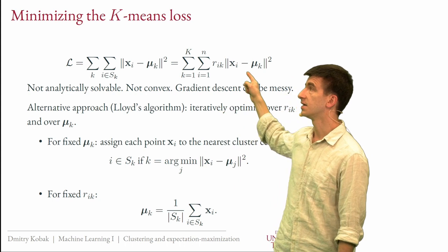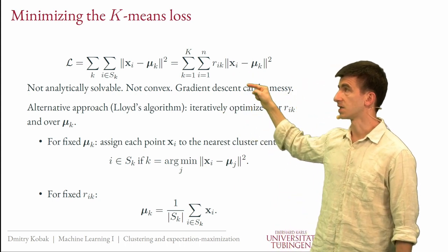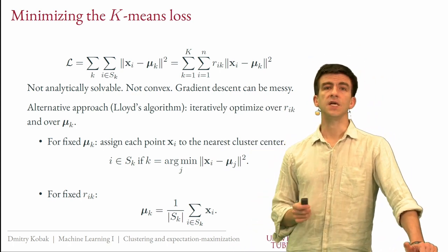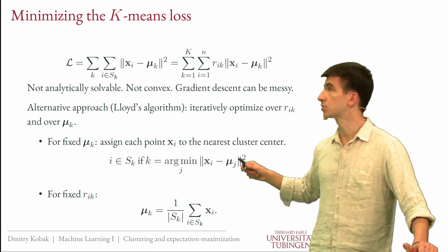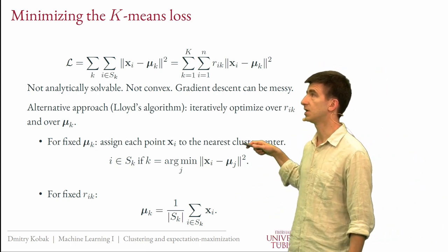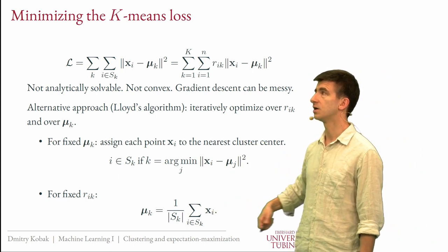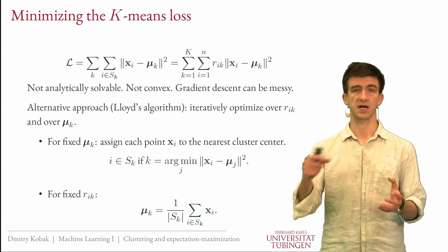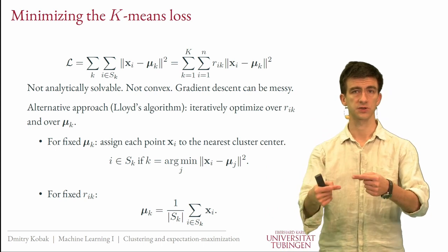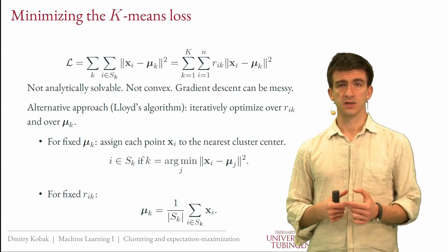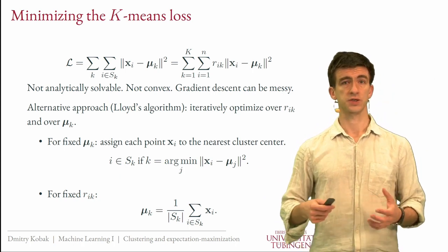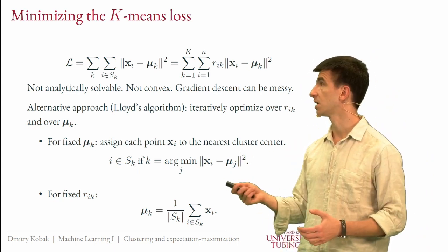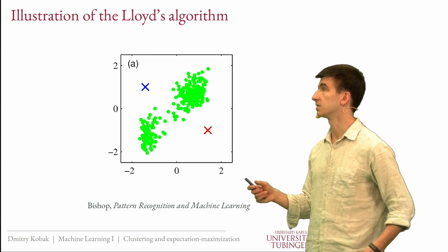So we have these two steps that are each super simple: here we assign each point to the nearest cluster, and here we choose the mean of each cluster as the average of all points currently assigned to it. Then we alternate. It's actually so simple that it may even be surprising the first time you encounter it that this works at all.